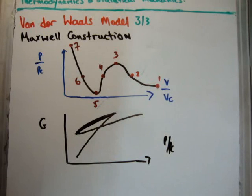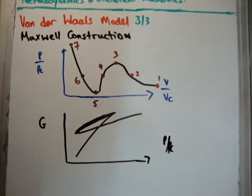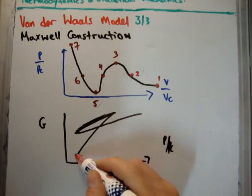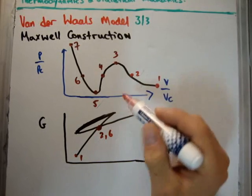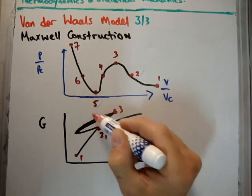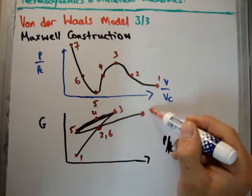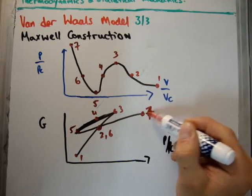So, it should look something like this. If we use the same numbering system that I did up here, we'll get the following. There's point 1, we have point 2 and 6, point 3, point 4, point 5, and point 7.